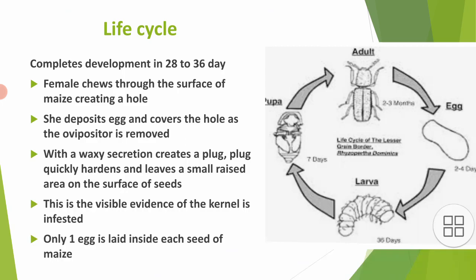Females chew through the surface of maize, creating a hole, then deposit an egg and cover the hole as the ovipositor is removed. The ovipositor is a tubular organ through which a female insect deposits eggs. After depositing the egg, she covers it with a waxy secretion, creating a plug that quickly hardens and leaves a small raised area on the surface of the seed. This raised area is the only visible evidence that the kernel is infested. Only one egg is laid inside each seed.